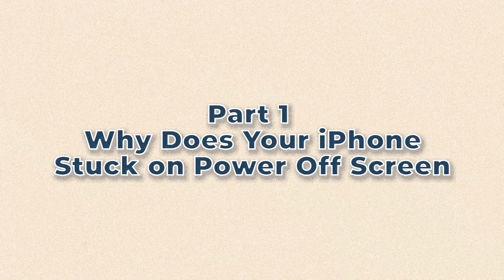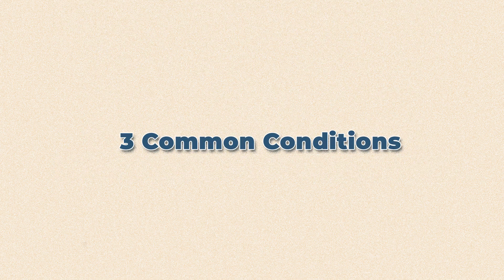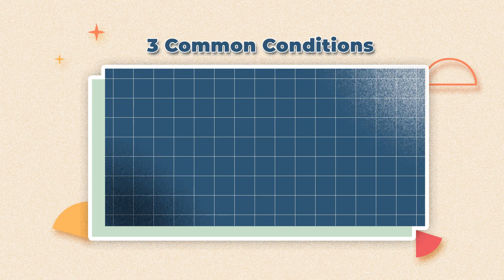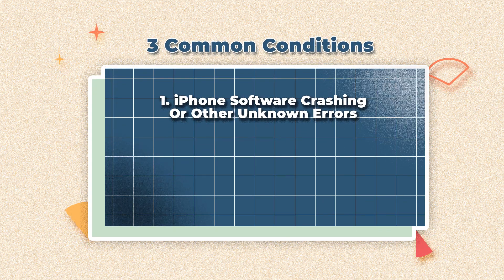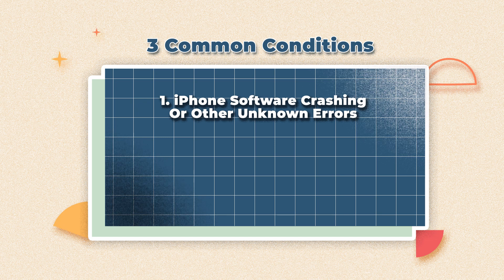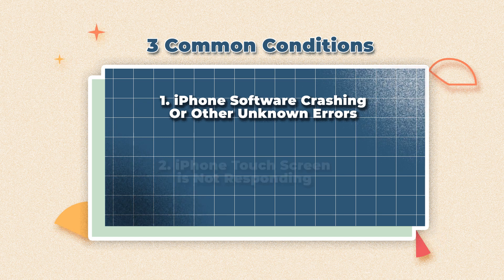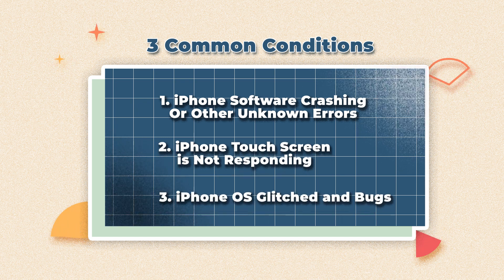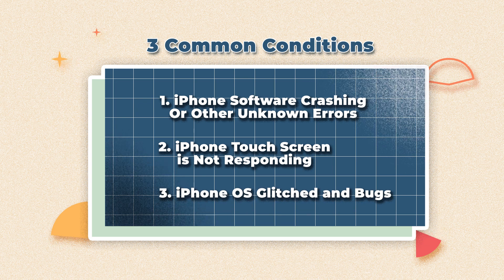Why does your iPhone get stuck on the power off screen? In such a case, three common conditions can be applied to explain it: iPhone software crashing or other unknown errors; iPhone touchscreen is not responding; iPhone OS glitches and bugs.